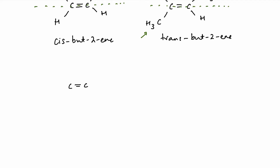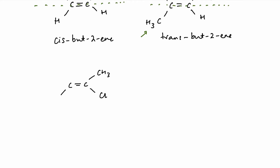However, if we take a slightly more complicated molecule — always draw them out so they look like ethene with side groups, it makes figuring out isomerism much easier — if we have a bromine and a chlorine on one carbon and a methyl and a hydrogen on the other, the cis-trans system doesn't work. This developed into E/Z isomerism.